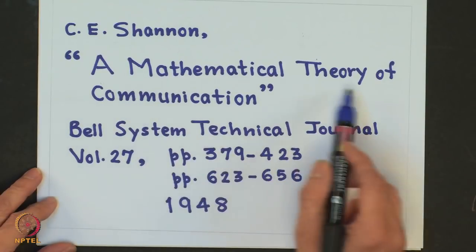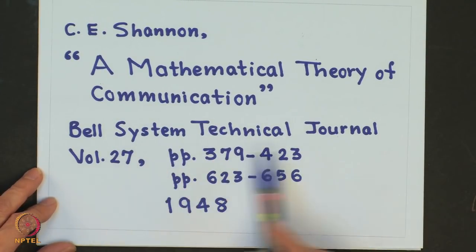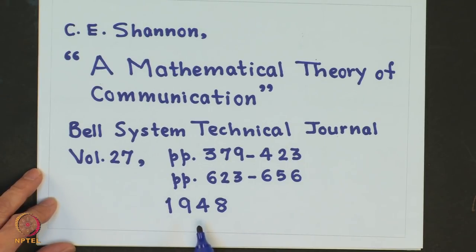There are two key aspects in the performance evaluation of a digital communication system. First, the efficiency with which information from a given source can be represented, and second, the rate at which information can be transmitted reliably over a channel. The fundamental limits on these key aspects have their roots in information theory. Information theory was founded by Shannon, and the first paper was published in 1948, titled 'A Mathematical Theory of Communication,' published in two parts in Bell System Technical Journal, volume 27.